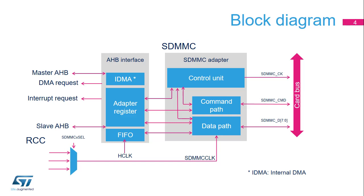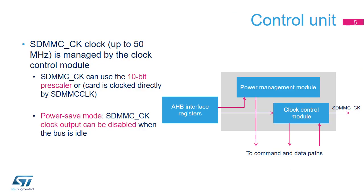Two clocks are available for the SDMMC controller: the APB clock or PCLK for the APB interface, and the SDMMC clock or SDMMC CLK for the SDMMC adapter. The SDMMC adapter includes a control unit that contains a power management module and a clock control module with the clock divider for the card clock, SDMMC CK. The clock control module provides a 10-bit pre-scaler for SDMMC CK clock generation, which allows it to generate a clock ranging from SDMMC CK down to SDMMC CK/2046.